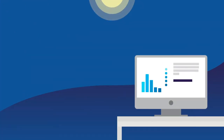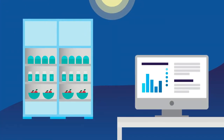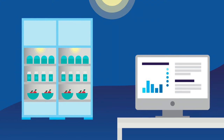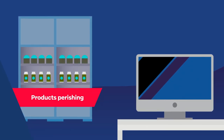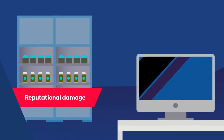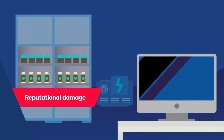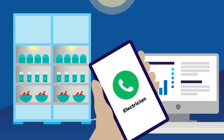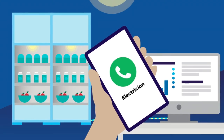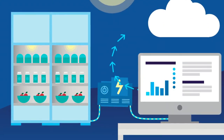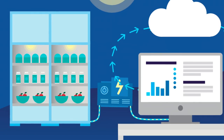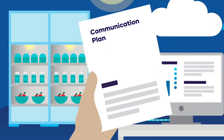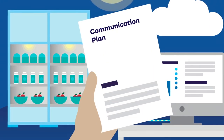For example, imagine your business produces food products that need refrigeration. What would you do if the power went out? This brings up all kinds of risks, like your products perishing, loss of customer data, or damage to your reputation if you can't fill orders on time. You might deal with this type of disruption by having a backup generator in place, keeping your electrician's details at hand, and running daily computer backups using off-site cloud storage, and having a communication plan in place to keep staff and customers informed.